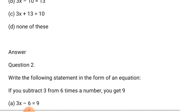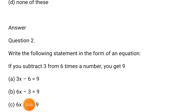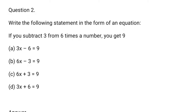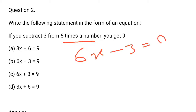Question number 2: Write the following statement in the form of an equation. If you subtract 3 from 6 times of a number, you get 9. So, 6 times of a number means 6x. If you subtract 3 from 6x, you get 9. So, 6x minus 3 is equal to 9. B option is correct.